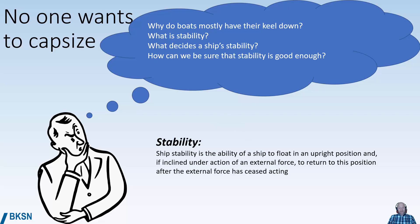We'll have an attempt at a definition: a ship's stability is the ability of a ship to float in an upright position, and if it is inclined under action of an external force, to return to this upright position after the external force or the heeling torque has ceased acting upon the vessel.